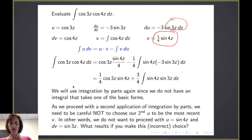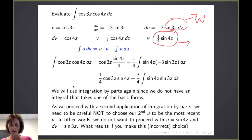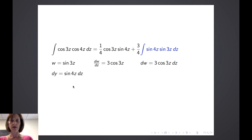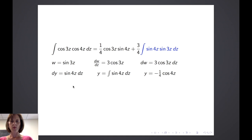Instead, we will continue using a different variable name. We'll let w equal sine of 3z and dy equal sine of 4z dz. Taking the derivative of sine of 3z with respect to z, dw is equal to 3 cosine of 3z dz. y will be the integral of sine of 4z dz, which equals negative one-fourth cosine of 4z.